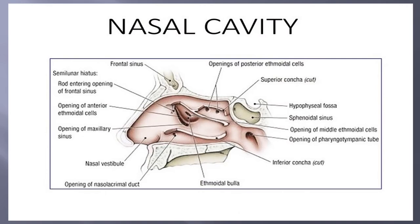The nasal cavity has a pathway. The nasolacrimal duct makes two ways — one to the nose and one to the eye. This duct allows secretions to come out when we are crying — this is the duct for lacrimation.